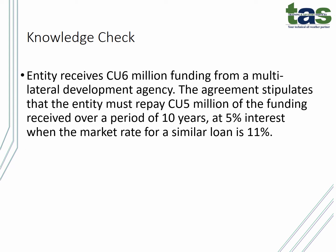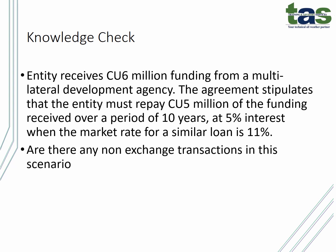Knowledge check: an entity receives six million dollars funding from a multilateral development agency. The agreement stipulates that the entity must repay five million of the funding received over a period of ten years at five percent interest, when the market rate for similar loans is eleven percent. Are there any non-exchange transactions in this scenario? There is an element of both exchange and non-exchange revenue. The five million dollars to be repaid is an exchange transaction. The one million dollar difference becomes a donation — a non-exchange transaction. The loan at the market rate of eleven percent is the exchange portion, and the interest difference between five and eleven percent — six percent — which is not repaid, also becomes a donation and represents non-exchange revenue.